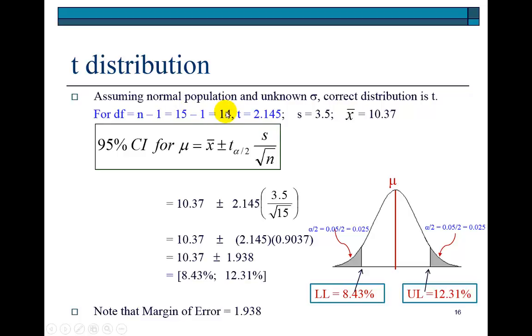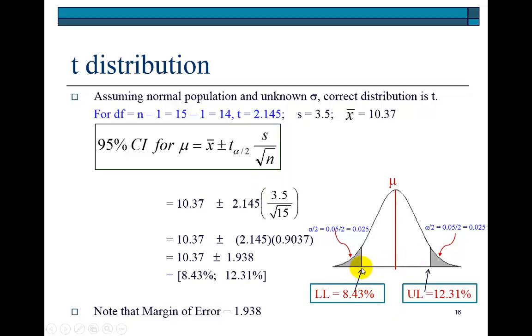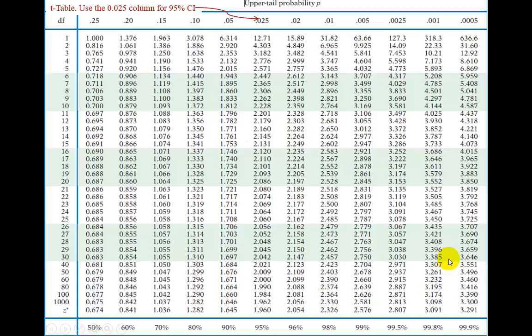With 14 degrees of freedom, we find the T statistic to be 2.145. Here is the T table. Typically, most T tables give you critical values based on one tail. However, in confidence interval estimation, we're looking for critical values corresponding to two tails. At alpha of 0.05, one half of the tail is 0.025, and the other is 0.025. Therefore, on this table, we're going to look for critical values under 0.025.